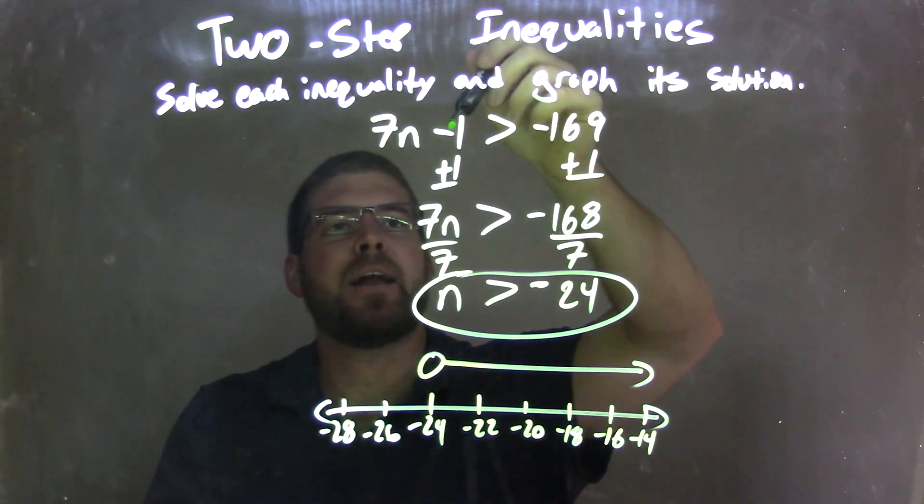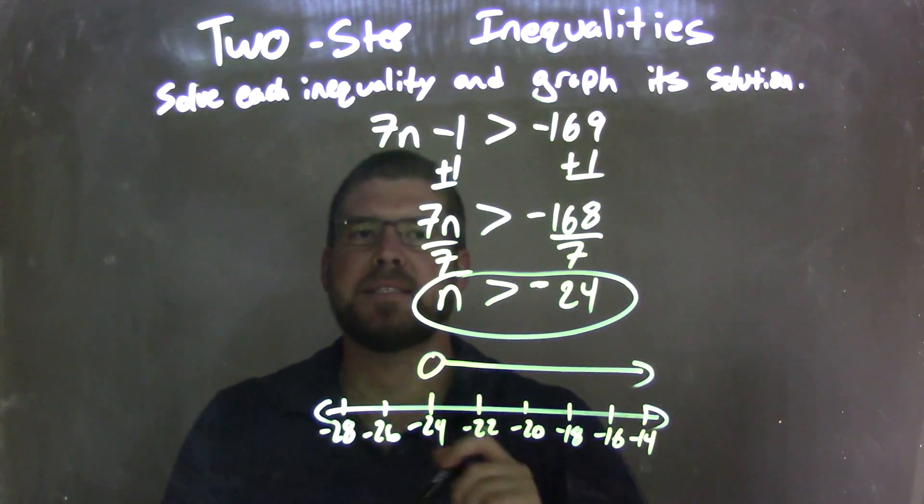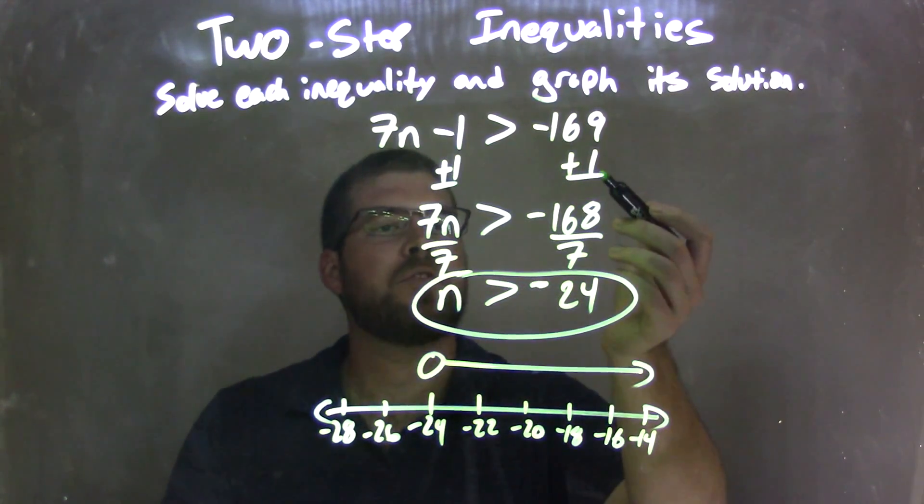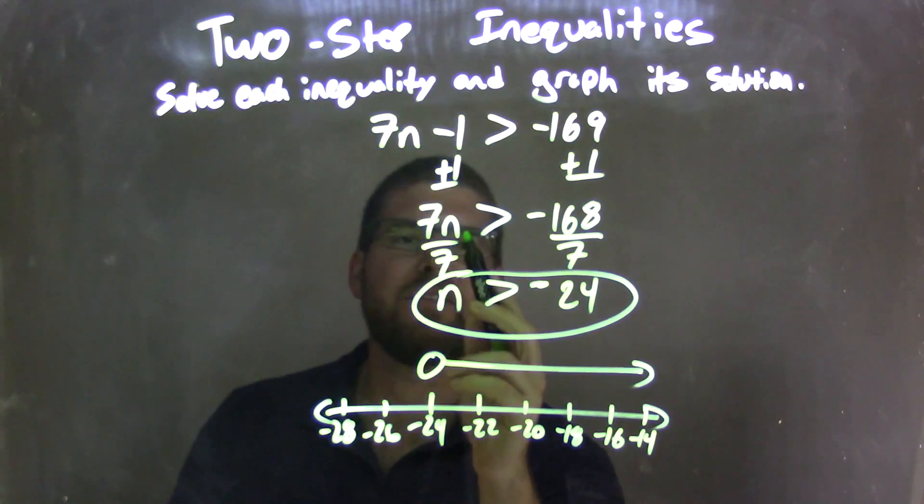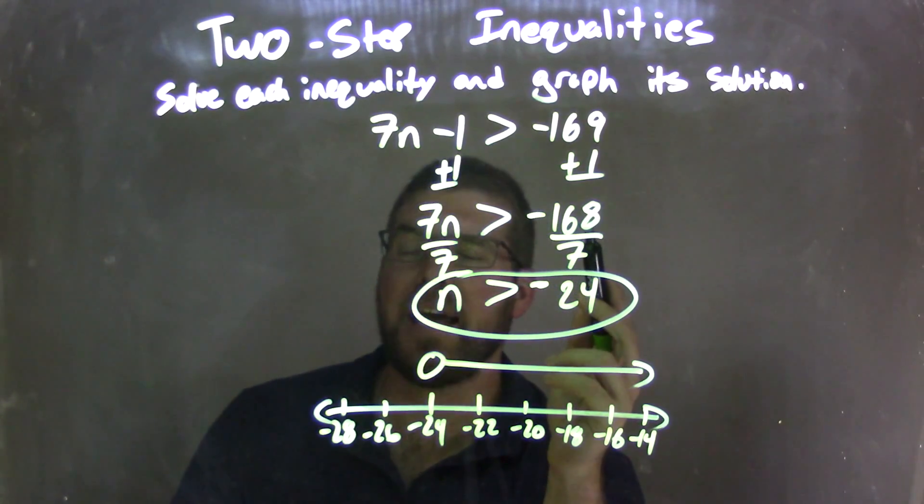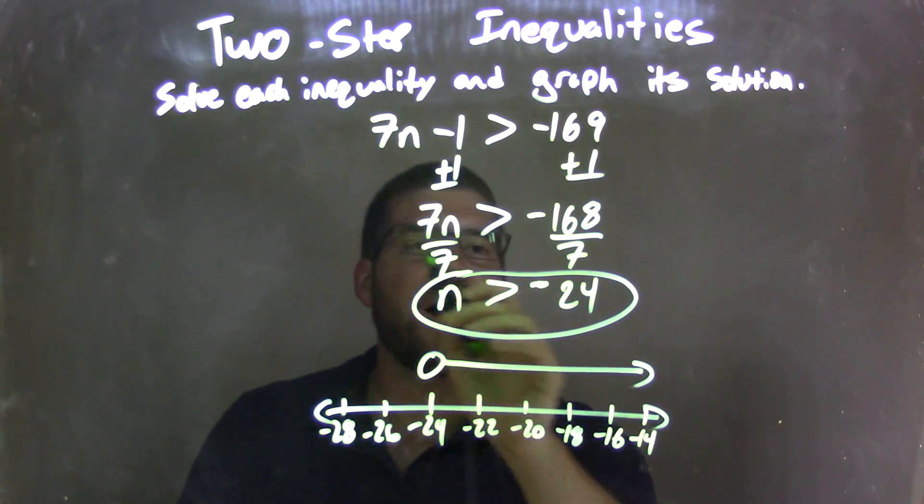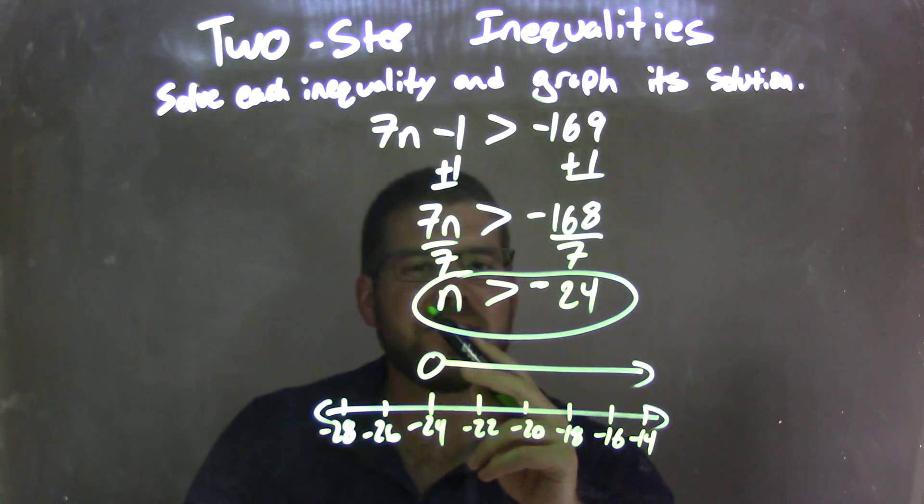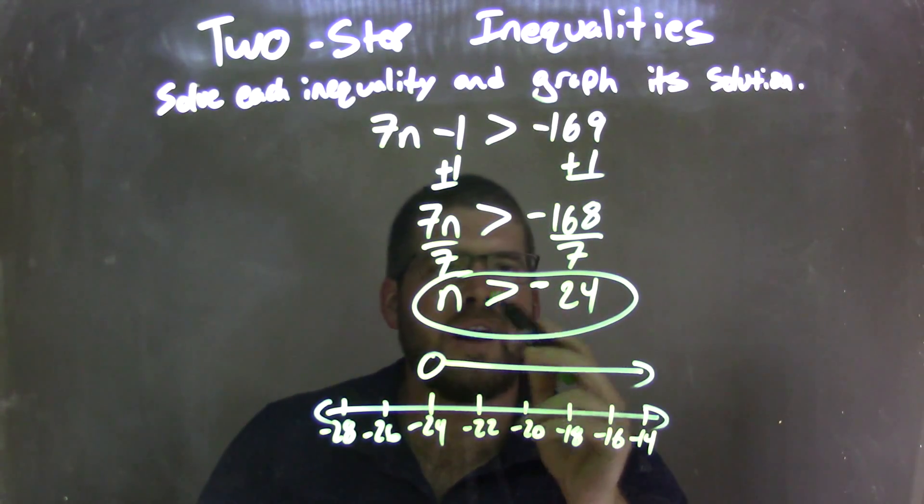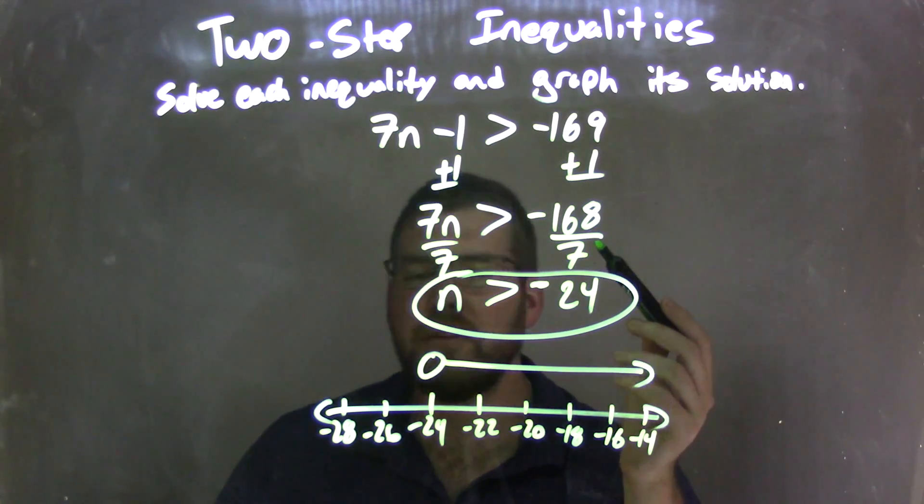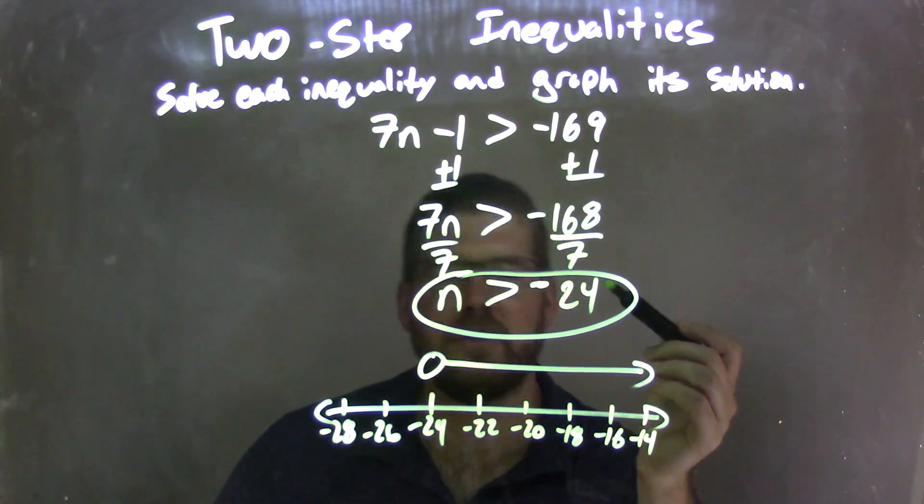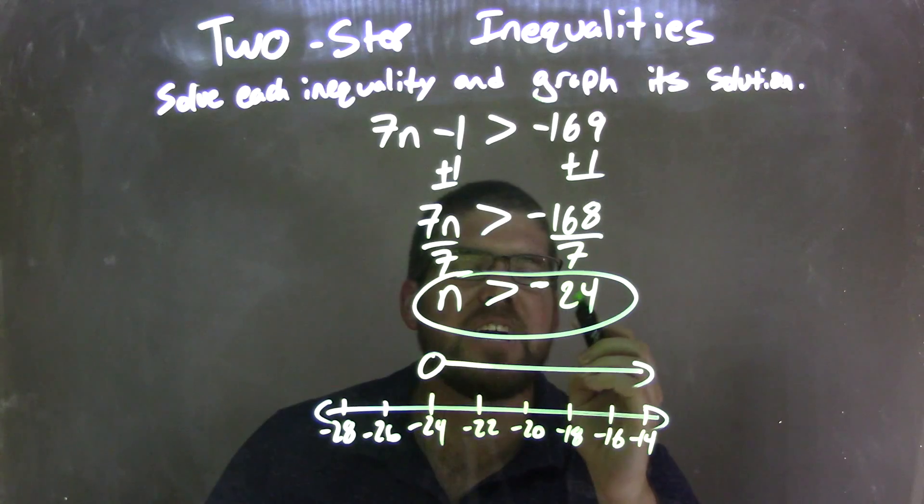I was given 7n minus 1 is greater than negative 169. I add 1 to both sides, giving me 7n by itself is greater than negative 168. Negative 169 plus 1 is negative 168. And then divide by 7 on both sides, giving me n isolated on the left, still the greater than sign. And then negative 168 divided by 7, which we can also use long division if we needed to, is negative 24.